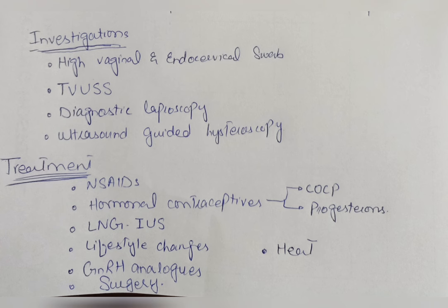GnRH analogs are used short-term, specifically when planning for hysterectomy. Before hysterectomy, GnRH analogs are used because they stop FSH and LH release, leading to decreased estrogen and progesterone. This causes anovulation and amenorrhea before surgery. GnRH analogs are therefore used for only a short period of time when hysterectomy is being planned.